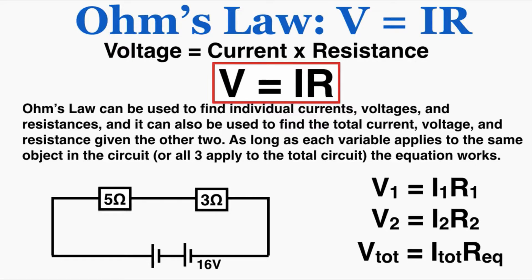Ohm's law can be used to find either individual currents, voltages, and resistances, or the total current, voltage, and resistance given the other two. As long as each variable applies to the same object in the circuit, or all three apply to the total circuit, the equation works.